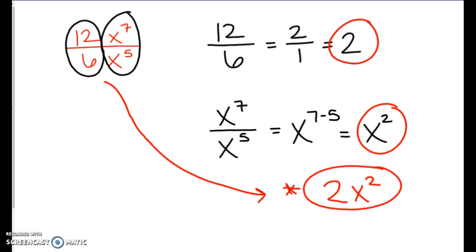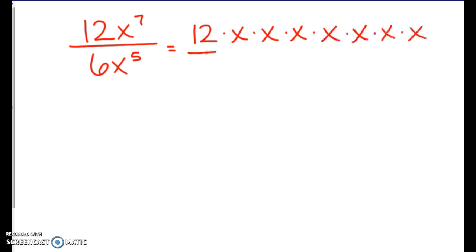Okay, so I want to show you this one again to show you how you can do it by expanded form. So if we have 12x to the 7th over 6x to the 5th, if we write this out in expanded form, we end up with 12 times x times x, and we're going to do that 7 times. And then we do the same to the bottom. We end up with 6 and then 5 x's.